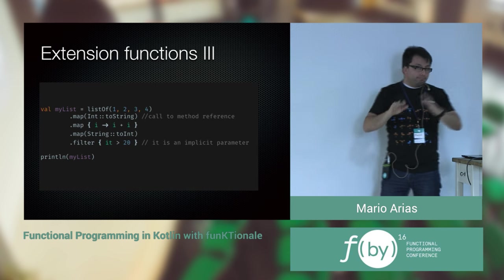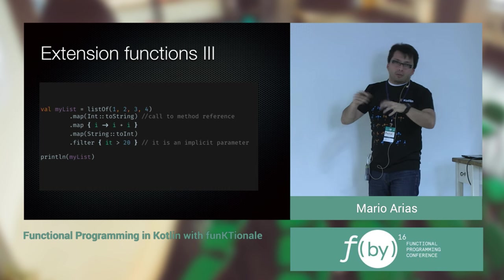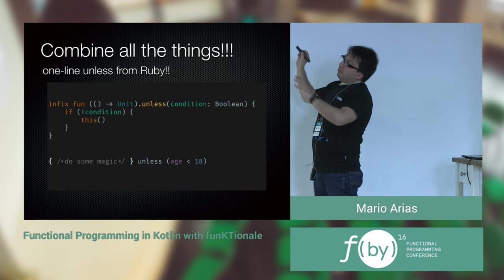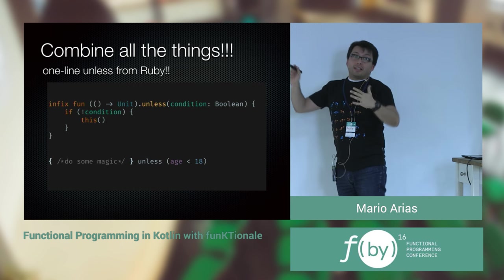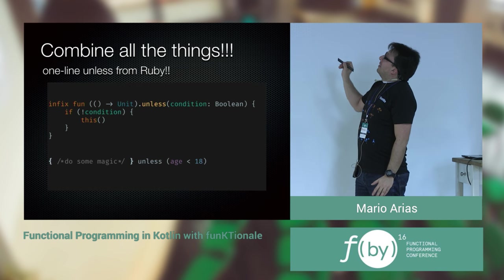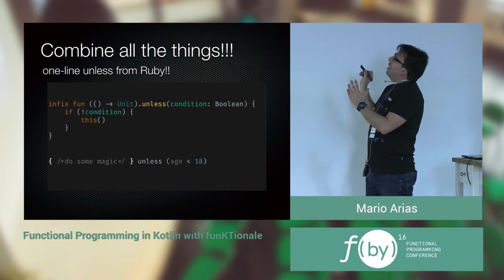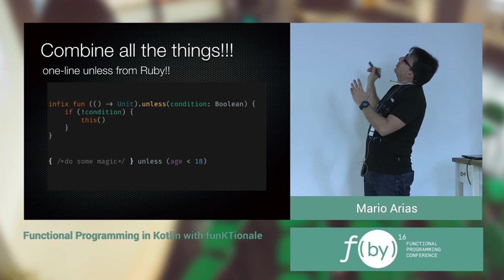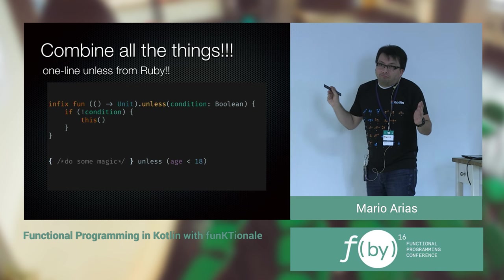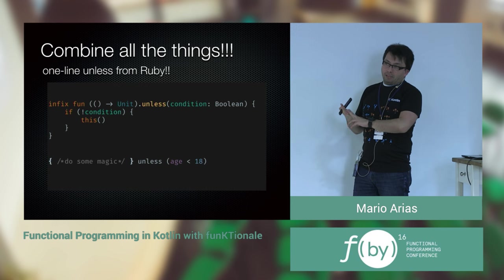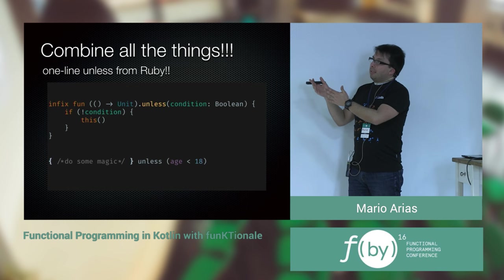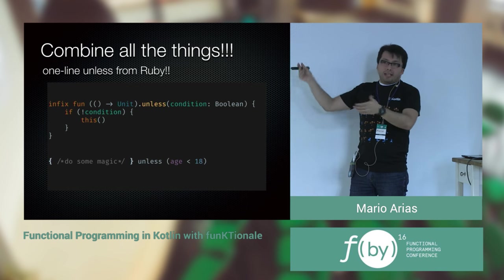Those are the main features of the language. Now let's combine everything. Let's create the `unless` from Ruby in one line in Kotlin. I'll extend the function type and add an infix `unless` with a conditional. I have this function, and unless the condition is false, I will not execute it. It's super easy to implement, it's at compile time so it's not dynamic, and if you're working in IntelliJ or any IDE with Kotlin support, it will autocomplete and validate correctness.